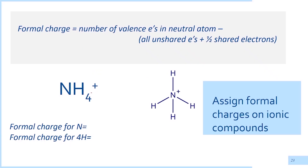Formal charges are calculated by subtracting the unshared electrons and the half-shared electrons from the valence electrons. Let's apply this formula to ammonium ion, NH4+.